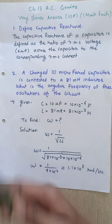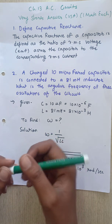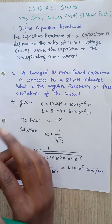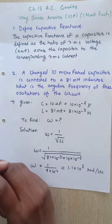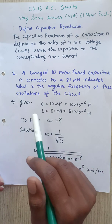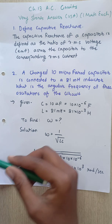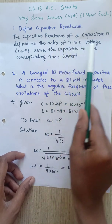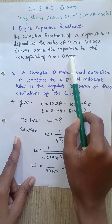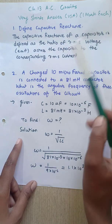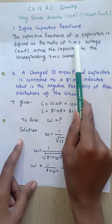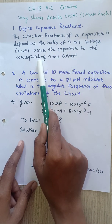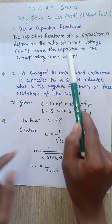Reactance is nothing but resistance. If we apply Ohm's law, V equals IR, then V by I — so instead of saying just voltage by current, we say RMS voltage across the capacitor to the corresponding RMS current.